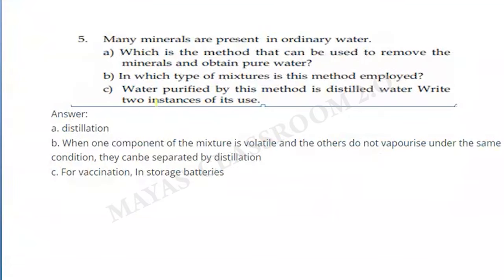Question five: Many minerals are present in ordinary water. Distillation is the method that can be used to remove minerals and obtain pure water. When one component of the mixture is volatile and others are not, they can be separated by distillation. Pure water is used for vaccination and storage batteries.